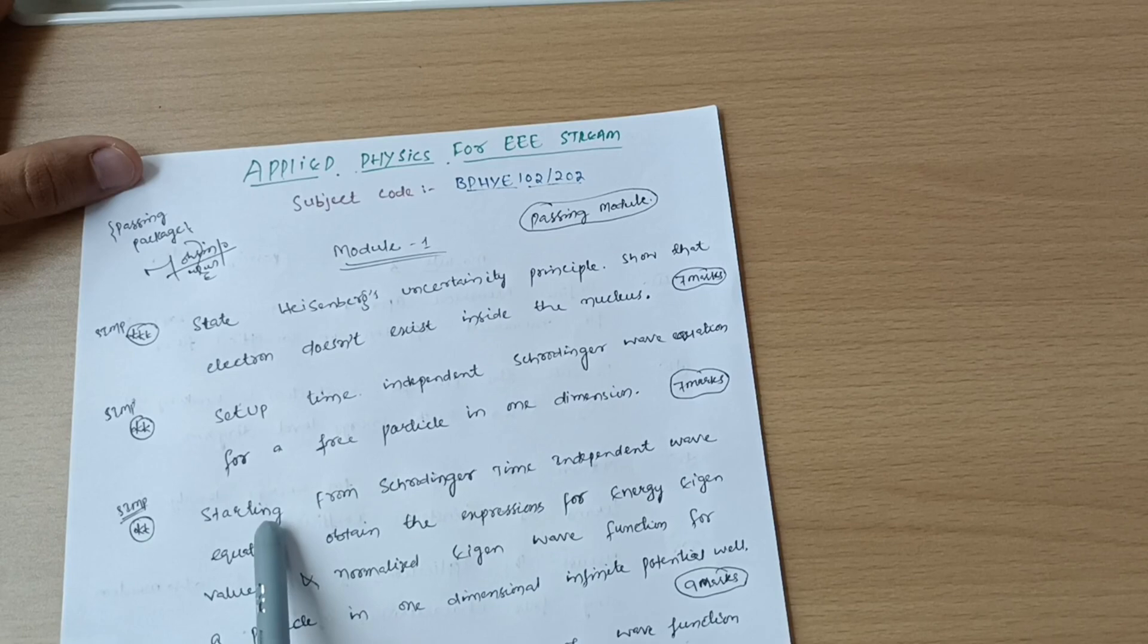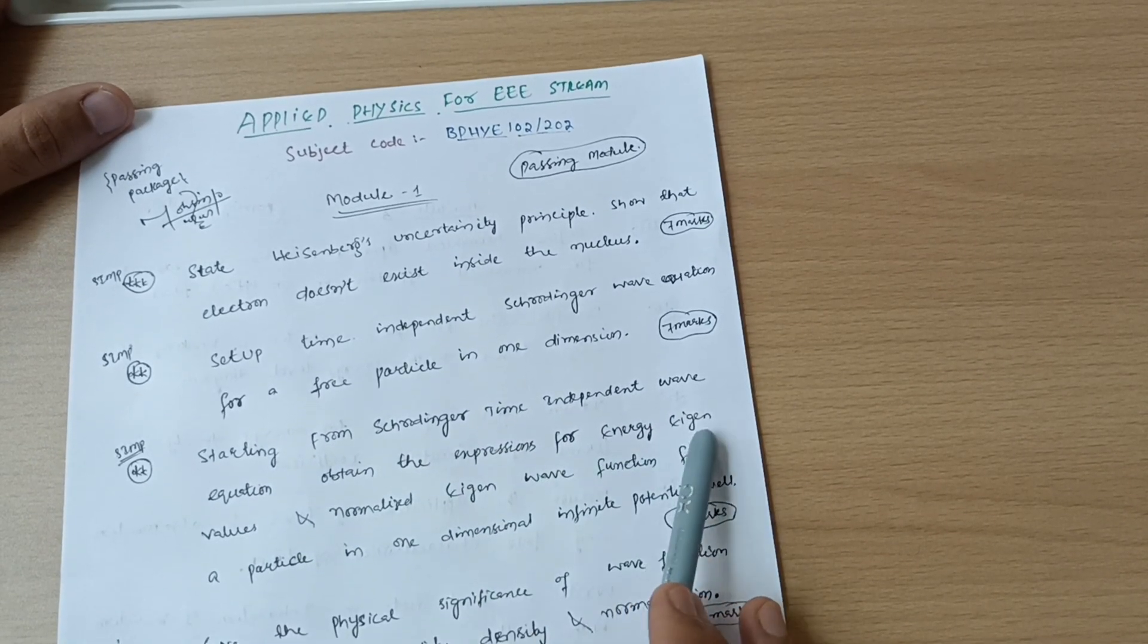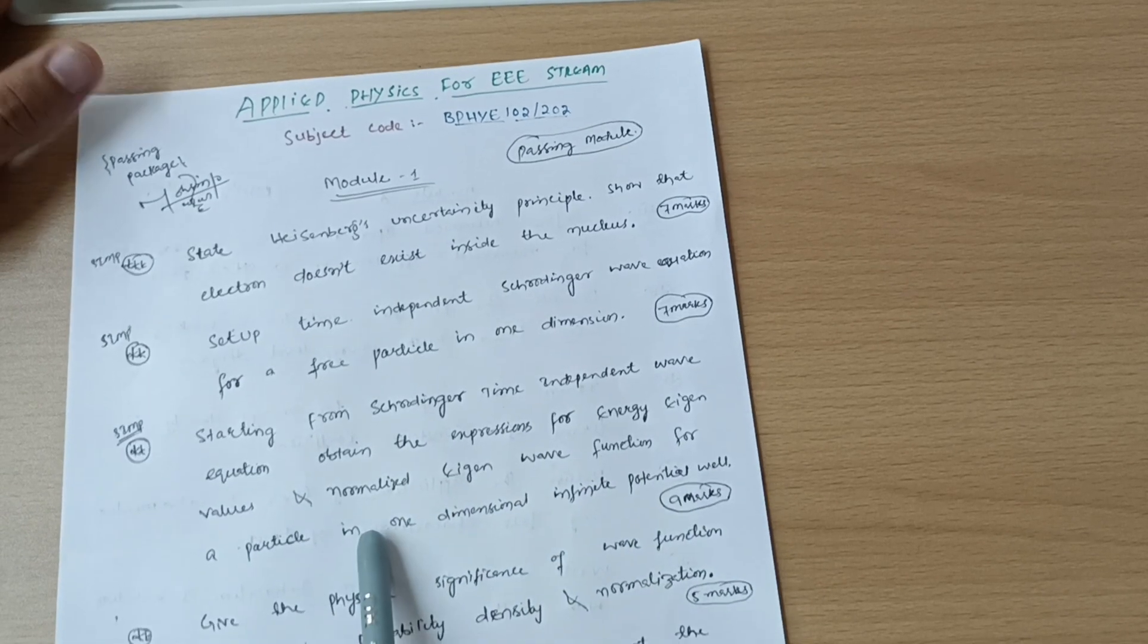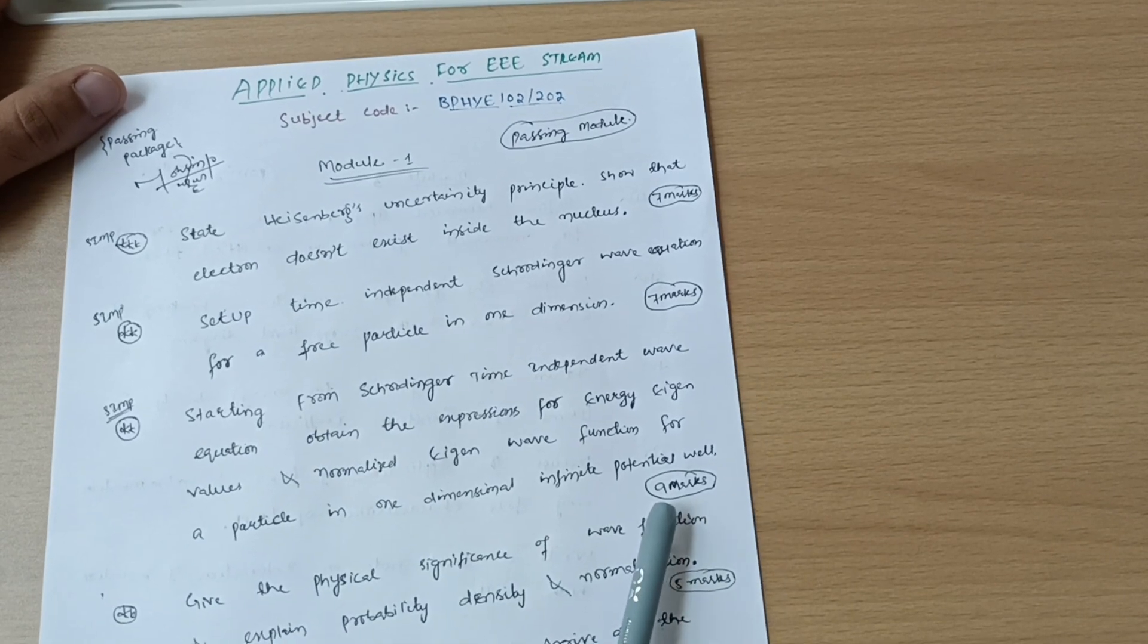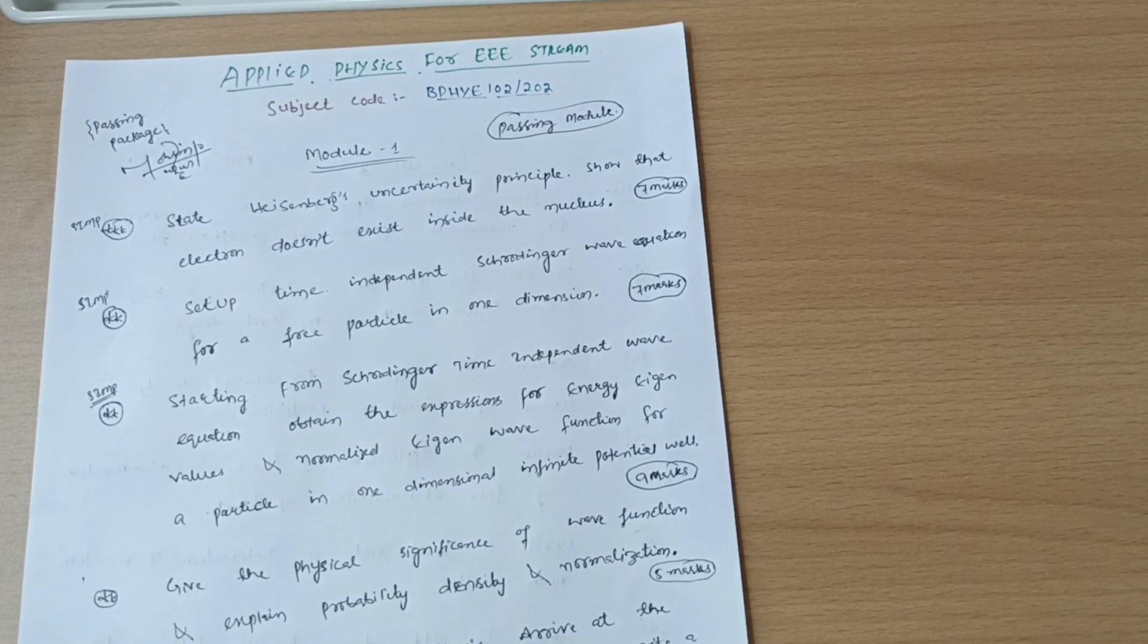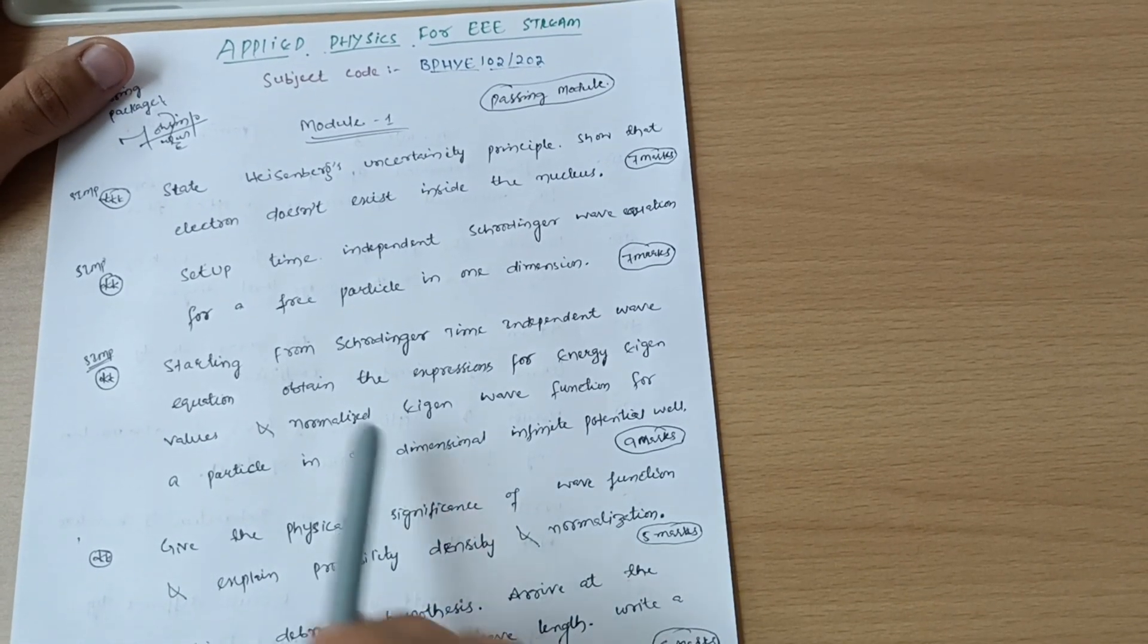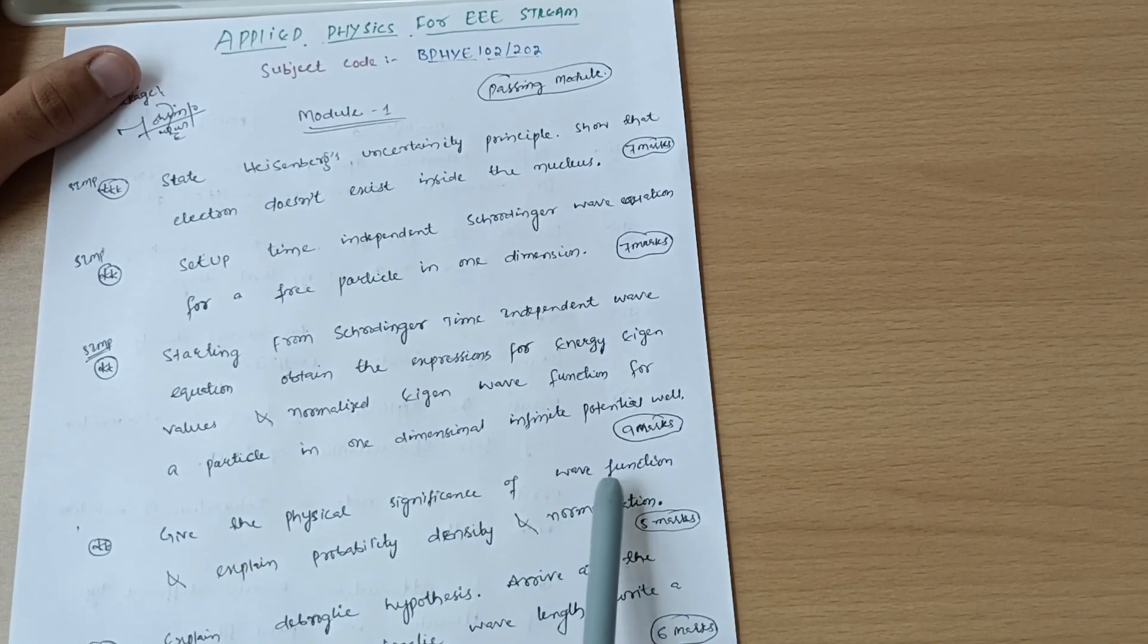Next is starting from Schrödinger time independent wave equation, obtain the expressions for energy eigenvalues and normalized eigenwave function for a particle in one dimensional infinite potential well. This is again a nine marks super important question. If you consider the earlier schemes also, this was the most important question considered in the VTU examination.